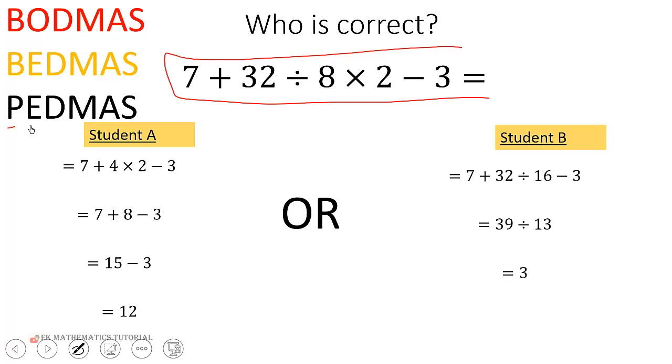There's no parenthesis, no exponents. We have division, multiplication, addition and subtraction. So this student divided 32 by 8 to get 4. After that, he multiplied 4 by 2 to get 8.